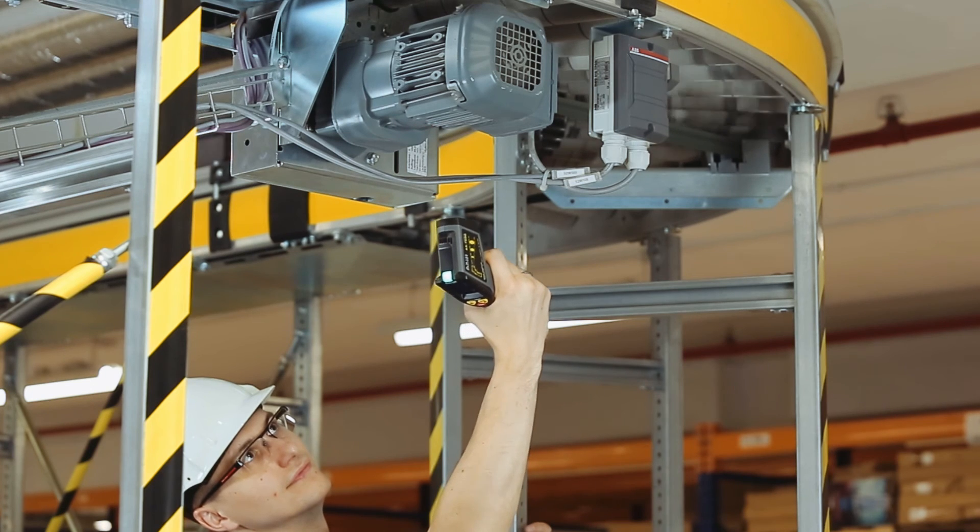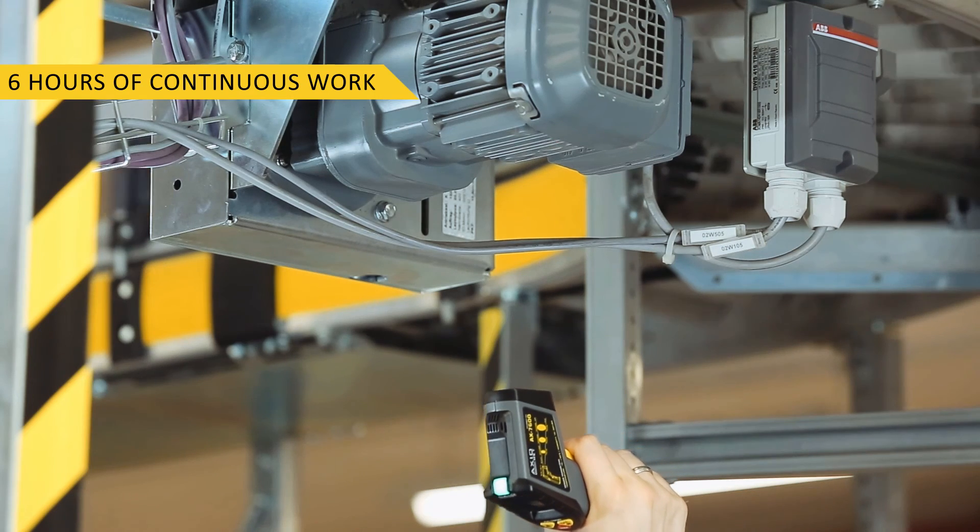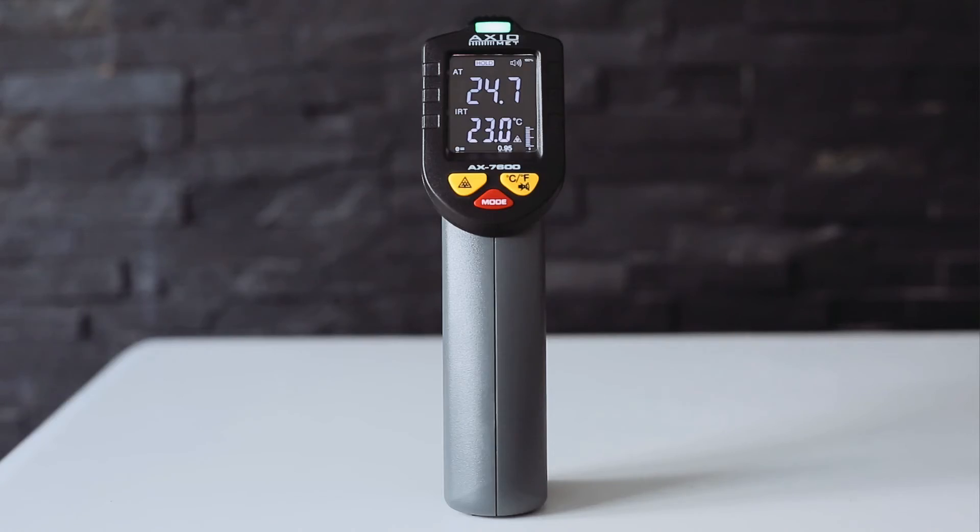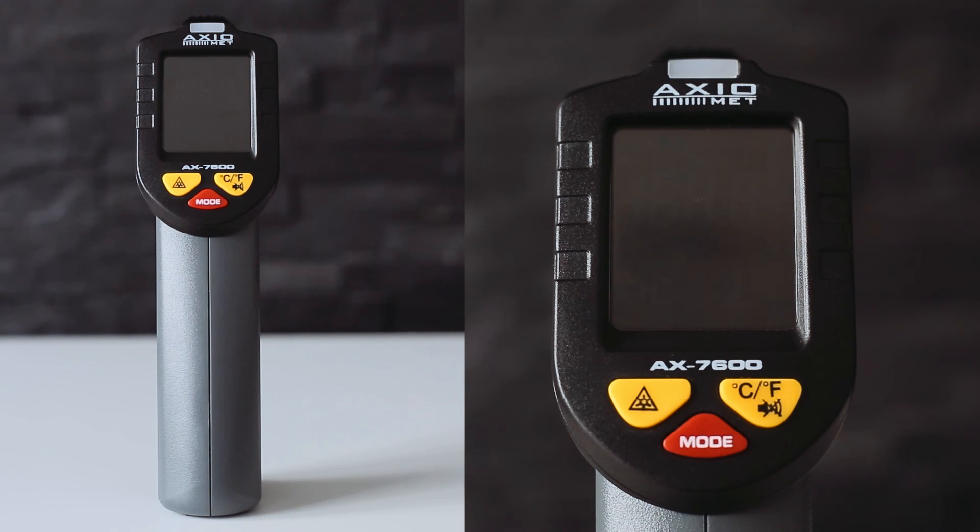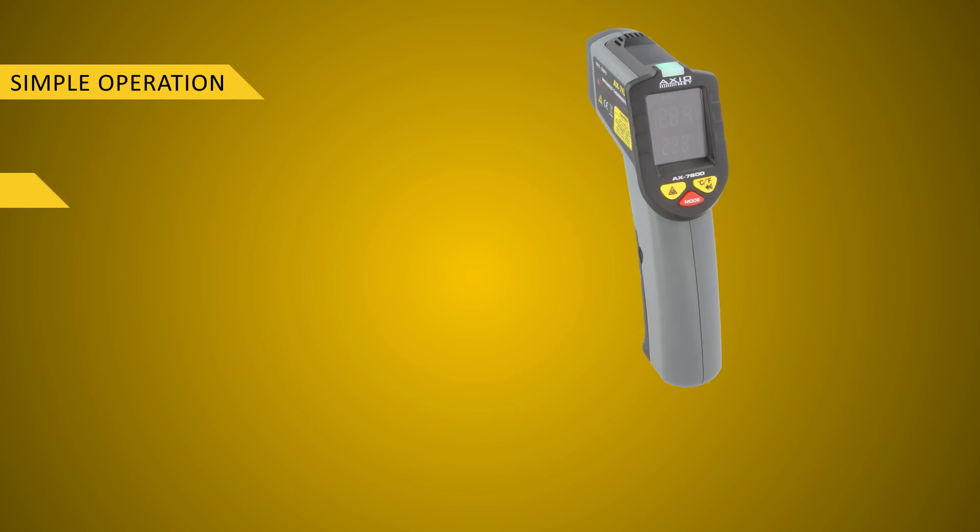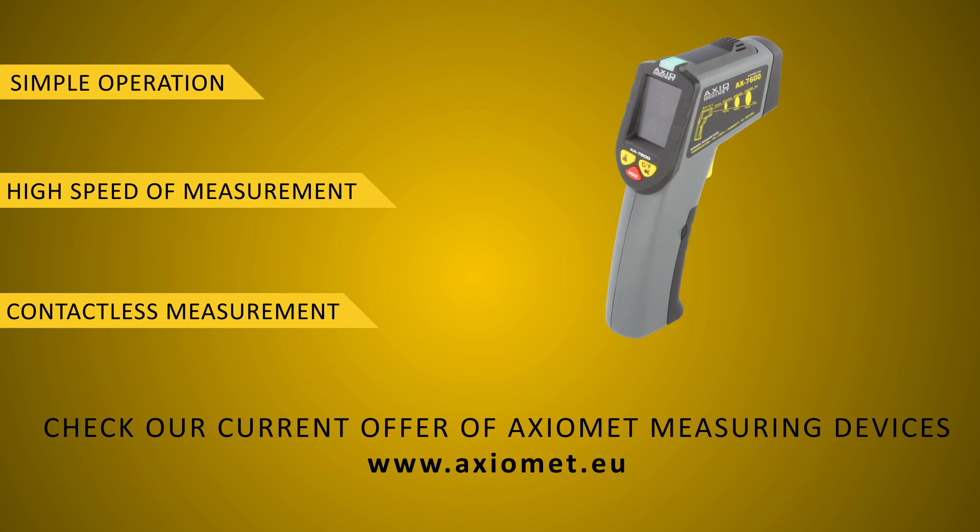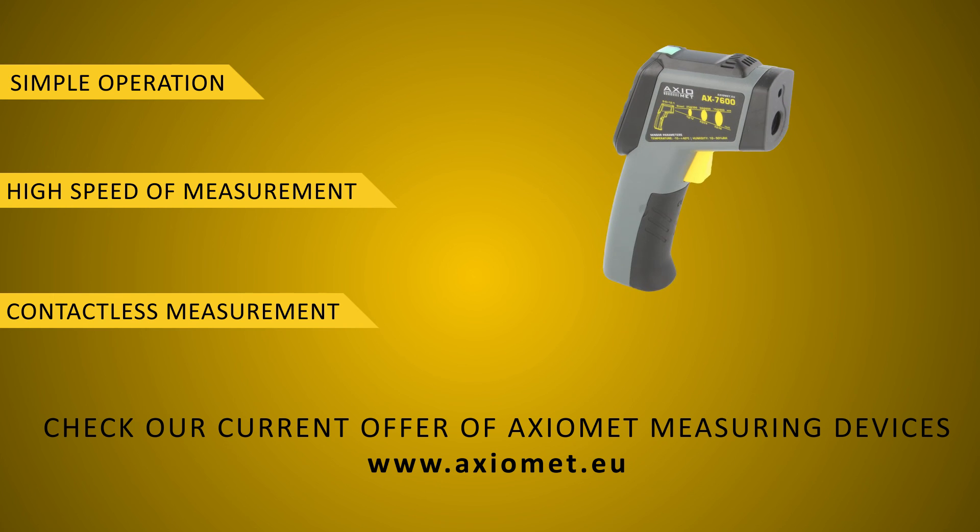The AX7600 battery provides up to six hours of use. The device turns off automatically after one minute of inactivity.